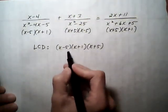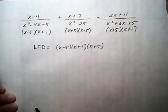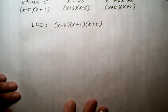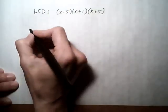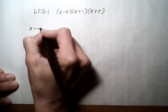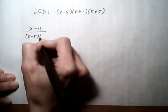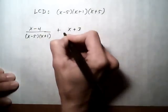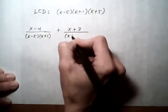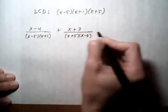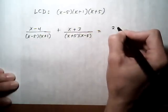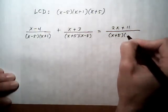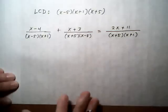What we want to do is take this LCD and multiply it to each fraction separately. So let's rewrite what we have for our factored forms of the denominator in the equations. We've got x minus 4 over x minus 5, x plus 1, plus x plus 3 over x plus 5, x minus 5. So this is just a rewriting step. I'm just rewriting the equation with the factored denominators. That way it won't be too messy to look at once I start multiplying by the LCD.